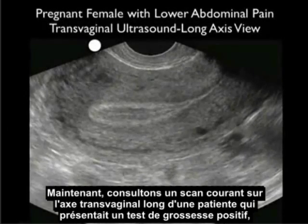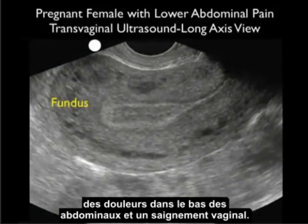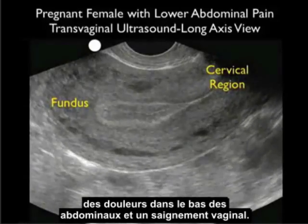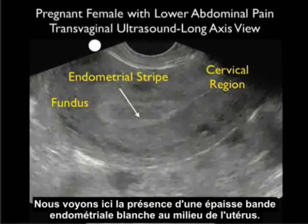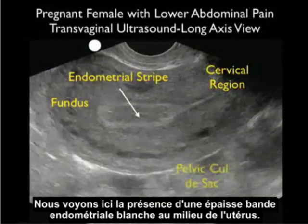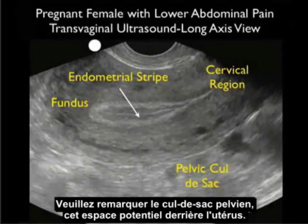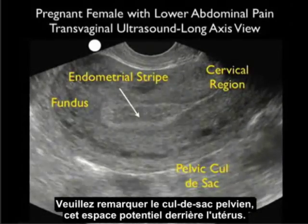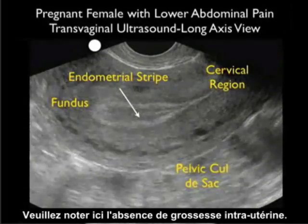Now let's review a transvaginal long axis scan from a woman who presented with a positive pregnancy test, lower abdominal pain, and vaginal bleeding. Notice the fundus shown here to the left, the cervix to the right. We see the presence of a thickened white endometrial stripe in the midline of the uterus. Notice the pelvic cul-de-sac — that potential space posterior to the uterus. Notice here the absence of an intrauterine pregnancy.